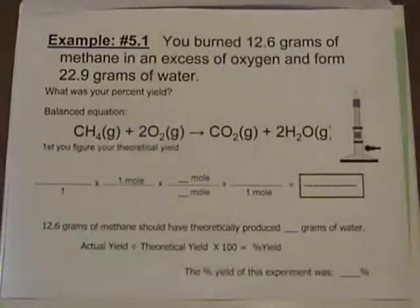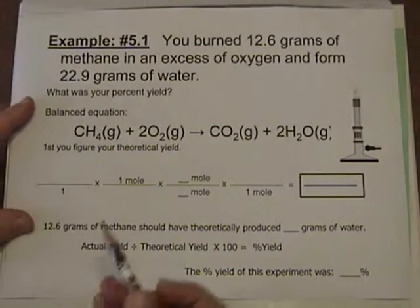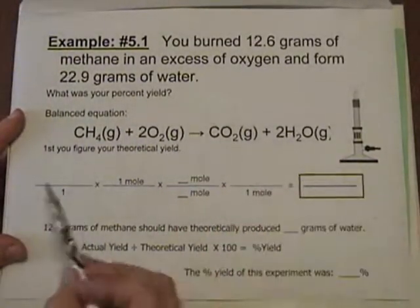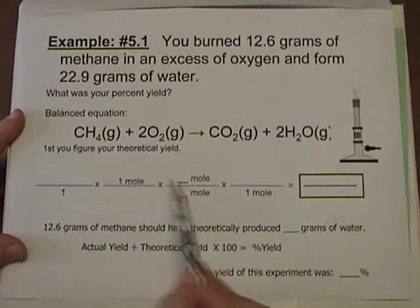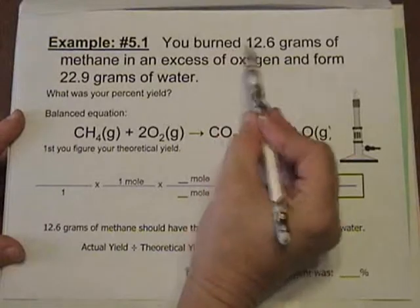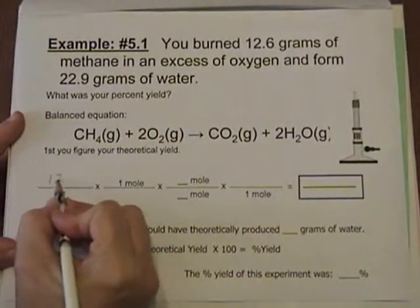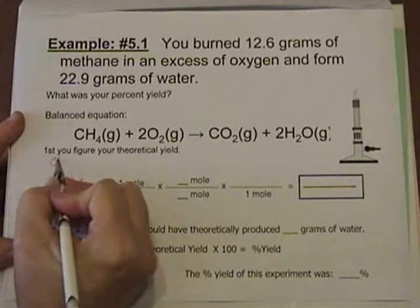Percent yield is where you figure out what is supposed to happen and compare that to what really did happen. To do this, you start off with a typical four fraction conversion factor kind of thing. You burned 12.6 grams of methane. So that's our known, 12.6 grams of methane, CH4.